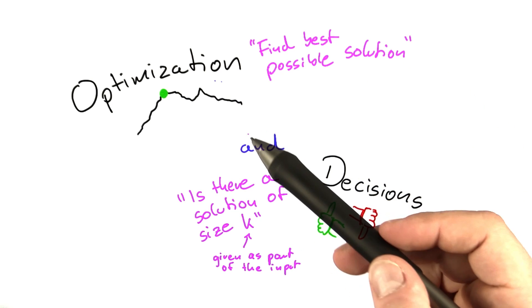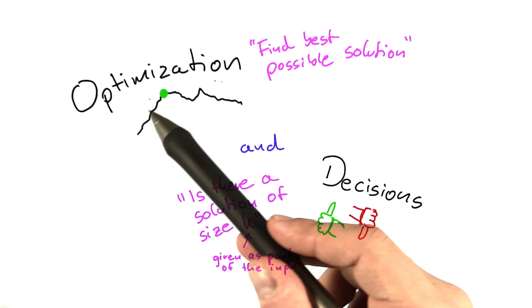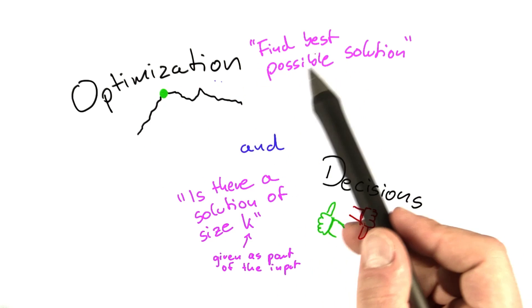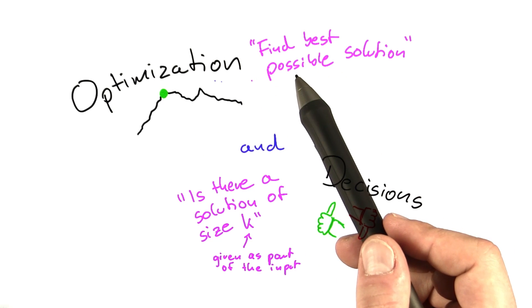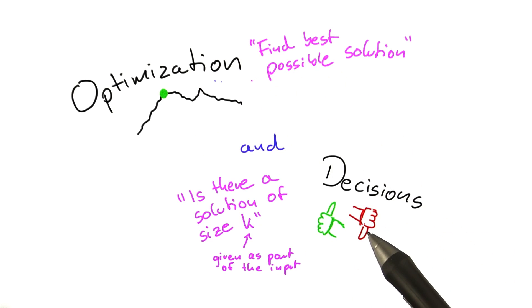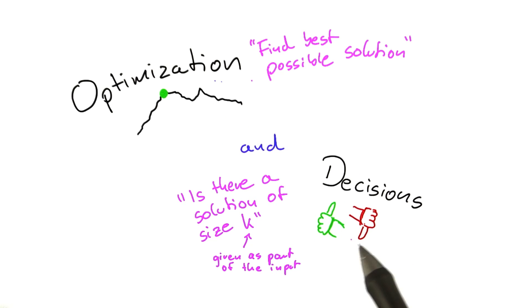So the main difference between an optimization problem and a decision problem is that for an optimization problem, we ask, find us the best possible solution or what's the best possible value that we can achieve. And in a decision problem, we have to ask, is it possible to achieve a value of k? And so up here, the answer will be some number. And down here, the answer can only be yes or no.